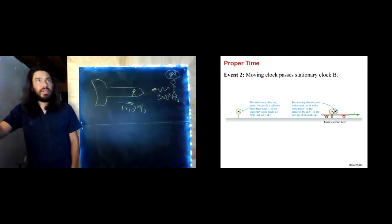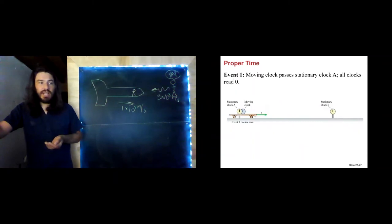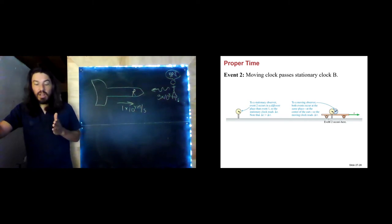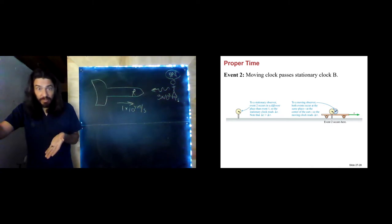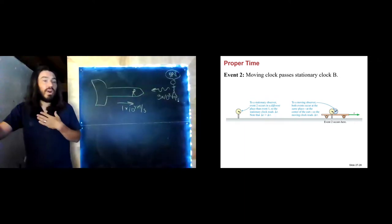The proper time is measured by an observer for whom the events happen at the same location. Imagine I'm standing on the train car. I pass clock A — it's right there. I wait a while, then I pass clock B — it's right there too, right in front of me. So clock A was in front of me, now clock B is in front of me. Those two events happen in the same location. Therefore, I on the train car measure the proper time.